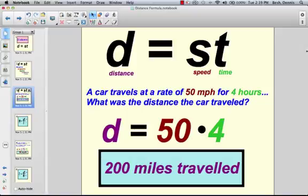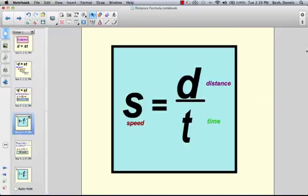For instance, if we find the distance by taking the speed times the time, then it only makes sense that we can actually find the speed by taking the distance divided by the time.